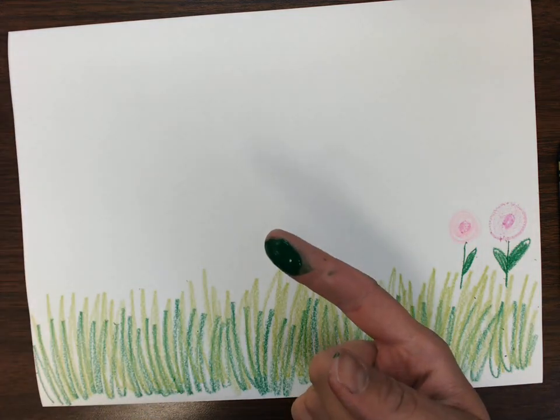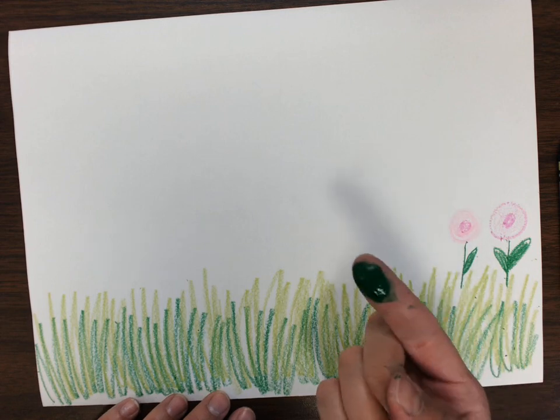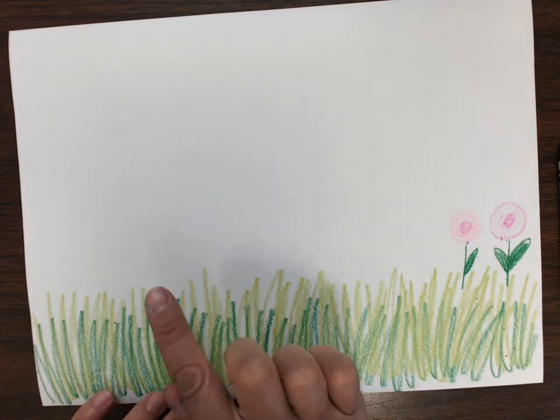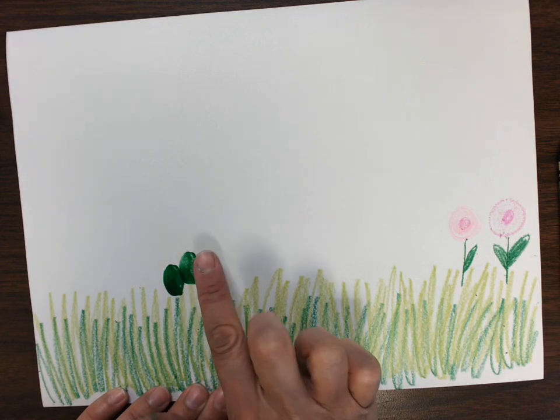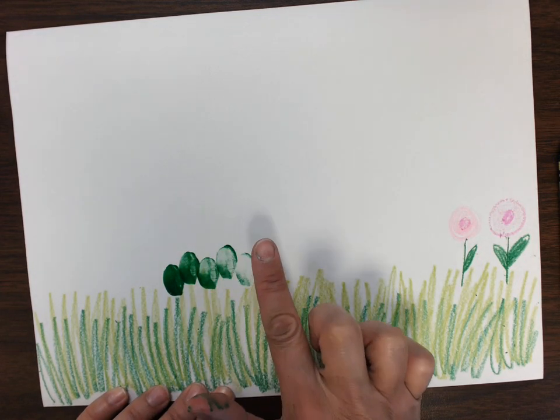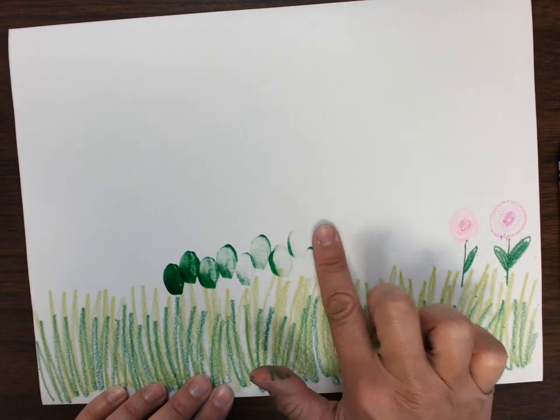We'll put just a little bit on your fingertip just one time because we want a caterpillar that ranges in value from dark to light. So then we're going to go dot, dot, dot, dot. And do you see what happens as I go? So they get lighter and lighter.